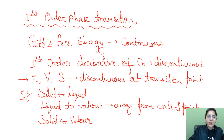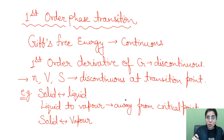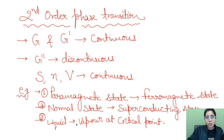For first order phase transitions, the Gibbs free energy G is continuous, while the first order derivative of G is discontinuous. The number density, volume, and entropy are discontinuous at the transition point. Examples include solid-to-liquid, liquid-to-solid, liquid-to-vapor conversion away from the critical point, and solid-to-vapor or vapor-to-solid transitions.